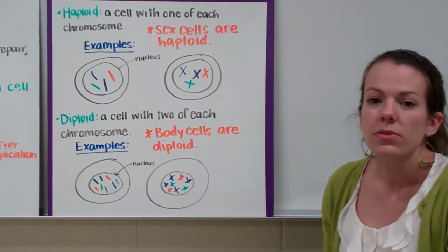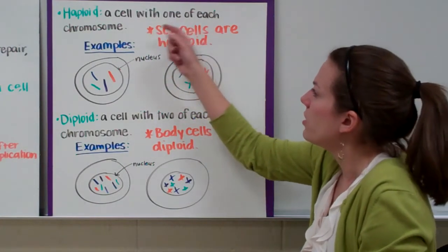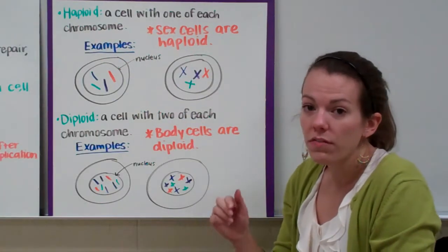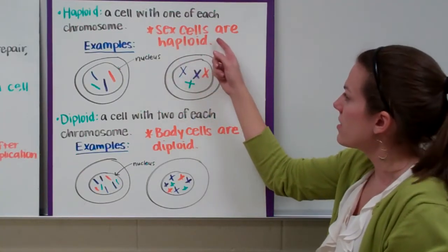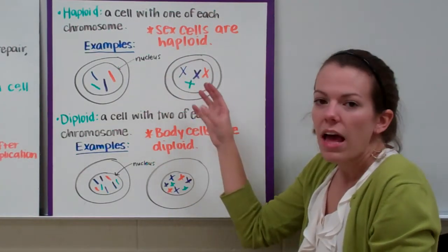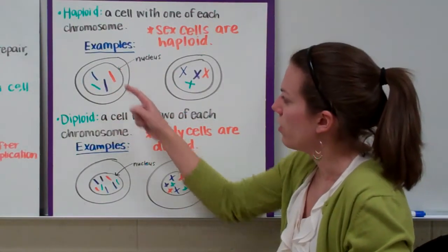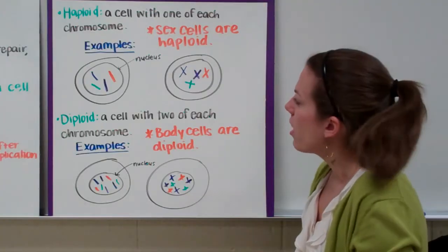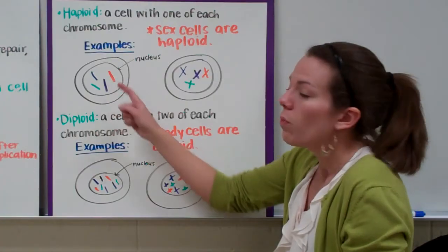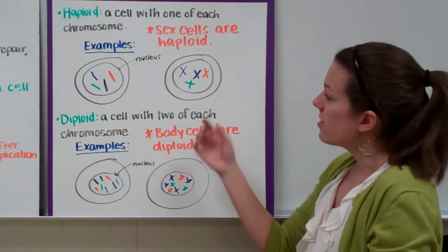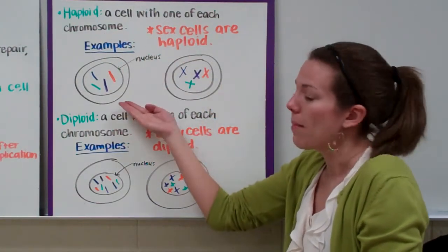Now let's talk about the difference between haploid and diploid cells. Haploid cells are cells with one of each chromosome — they only have one of each chromosome inside their nucleus. An example of haploid cells are sex cells. Here's a sketch of a cell with one blue chromosome, one green chromosome, one purple chromosome, and one orange chromosome. That corresponds with our definition of a cell with one of each chromosome, so this would be a haploid cell.